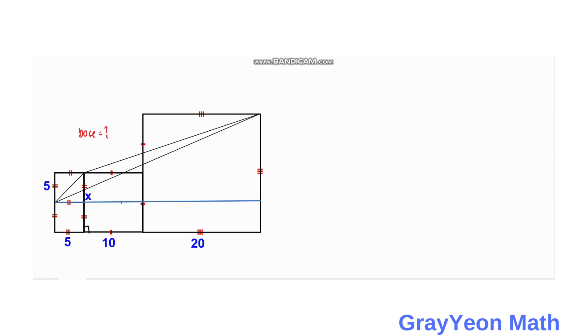To find for the length of x, we say that if we consider this small triangle here, then x over 5 is equal to this big triangle here, so this length is 15, and this whole length is 5 plus 10, 15 plus 20, that is 35. So 15 over 35.